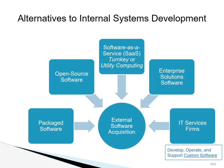Another type is open source software. Open source software has code available to the public, like the Linux operating system or Firefox browser. Generally, organizations buy support for any open source software they use from a vendor. For example, organizations that use Linux typically acquire Red Hat as one of the vendors that supports Linux.